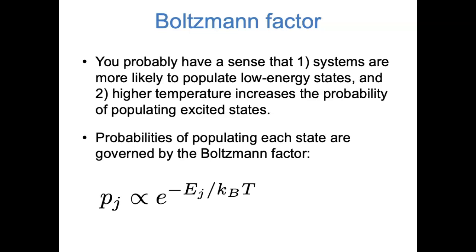This expression is the definition of a Boltzmann factor, which may be the most important concept in statistical mechanics. P with a subscript j is the probability that some energy state j will be occupied. The symbol next to it means proportional to, and the expression on the right is the Boltzmann factor — an exponential, e to the negative energy of state j divided by kBT.